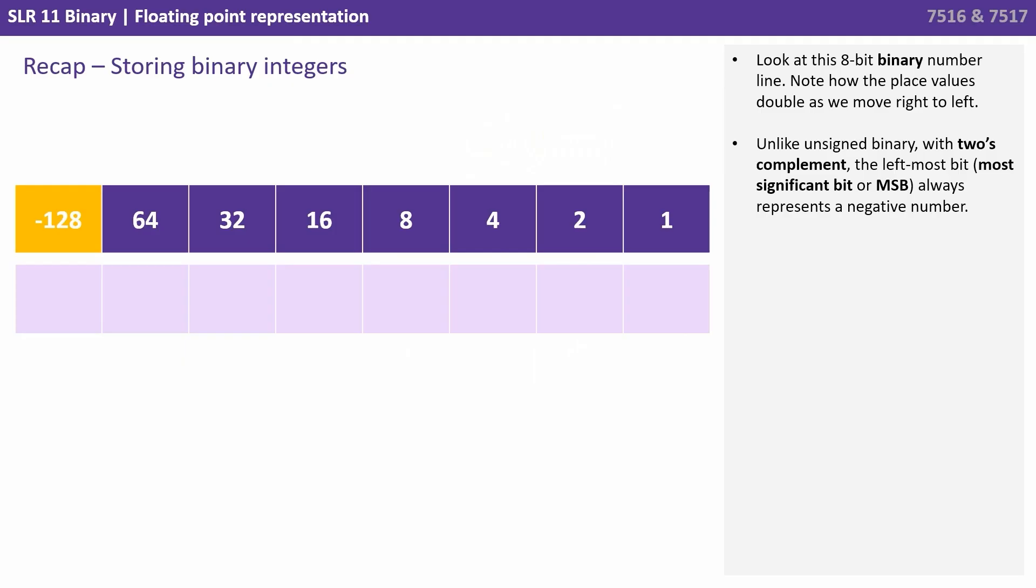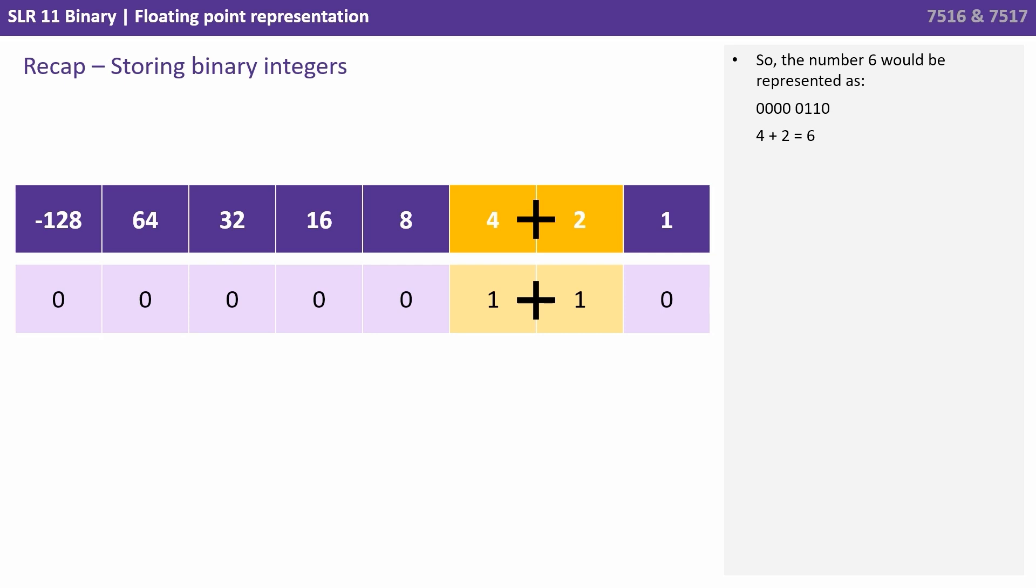Let's start with a recap of how we store binary integers. Look at this 8-bit binary number line. Note how the place values double as we move right to left. Unlike unsigned binary, with 2's complement the leftmost bit, the most significant bit or MSB, always represents a negative number. So the number 6 would be represented as 0000 0110. 4 plus 2 is 6.